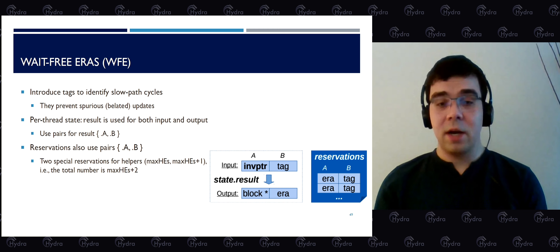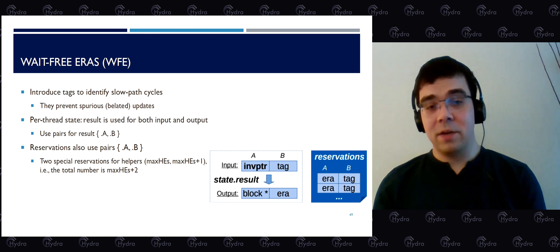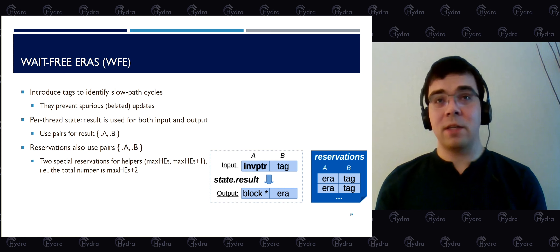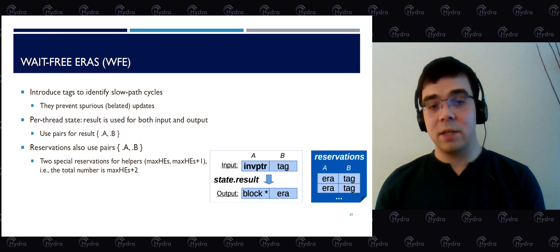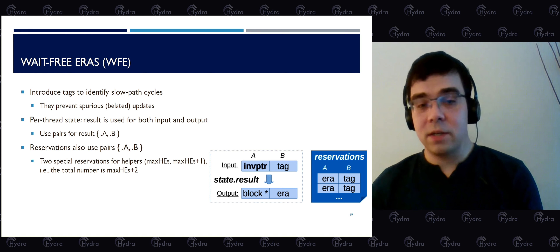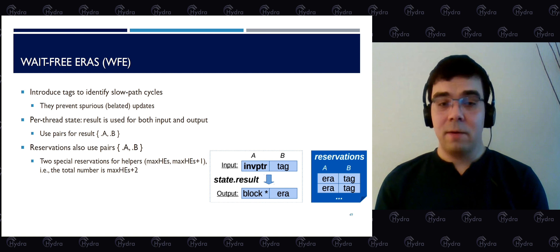One important observation: after 96 threads (more threads than cores), memory consumption for epoch-based reclamation skyrockets. The reason is that at that point we have preempted threads — and before those threads are scheduled back, we accumulate many deleted nodes that are not reclaimed timely. This emphasizes why bounding memory usage matters. Hazard Eras, IBR, Hazard Pointers, and Wait-Free Eras all show much better memory utilization in this regime. Similar trends are observed for the lock-free heterogeneous tree, with throughput differences but memory trends very similar to the hash map.